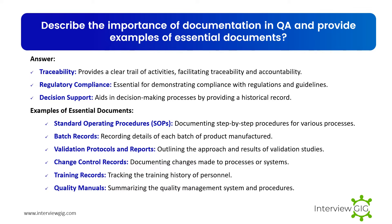Describe the importance of documentation in QA and provide examples of essential documents. Documentation provides traceability with a clear trail of activities, facilitates regulatory compliance by demonstrating adherence to regulations, and supports decision-making by providing a historical record. Examples of essential documents include: standard operating procedures (SOPs) documenting step-by-step procedures for various processes; batch records recording details of each batch of product manufactured; validation protocols and reports outlining the approach and results of validation studies; change control records documenting changes made to processes or systems; and training records tracking the training history of personnel.